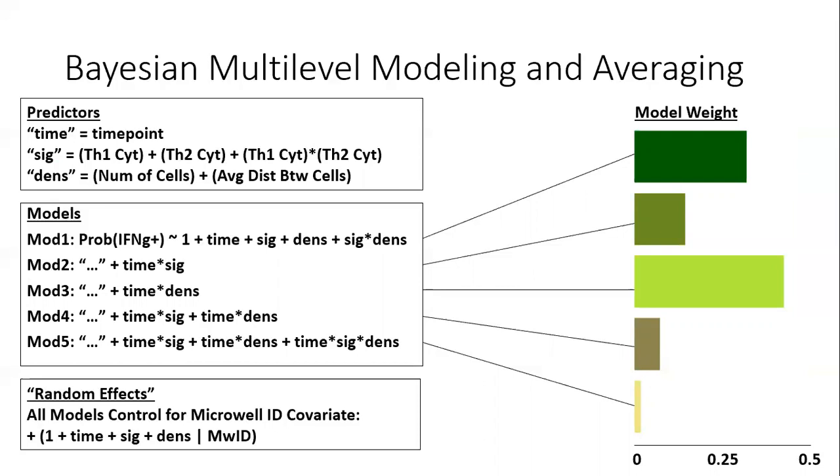In fact, I fit a family of models to account for changing impacts of each predictor through time. In the end, no model earned a majority of model weight, and so I averaged each of the models together.